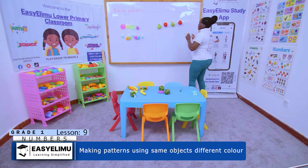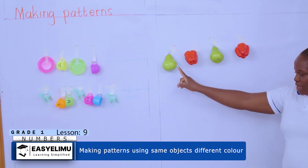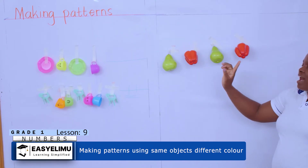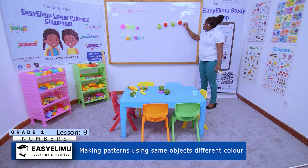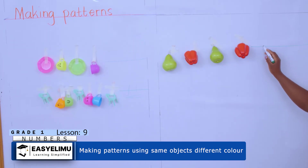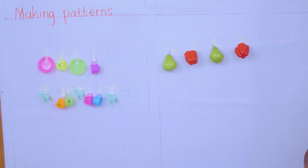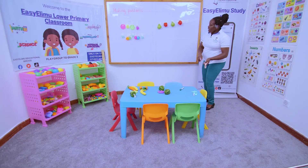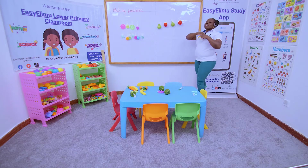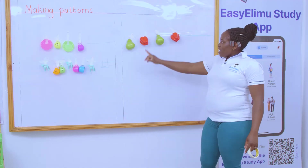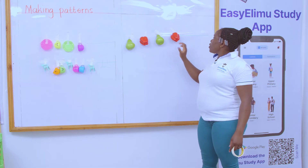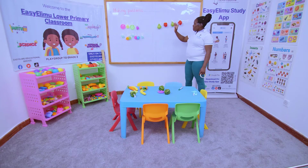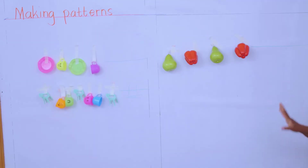Now my pattern is complete. Why? I have the pear, I have the capsicum, I have the pear again, and I have the red capsicum. If I'm told to fill in the missing pattern, I will still put a pear and still put another capsicum. The pattern continues: pear, capsicum, pear, capsicum — up to millions and millions, provided if I have two pears, my capsicum should also be two.